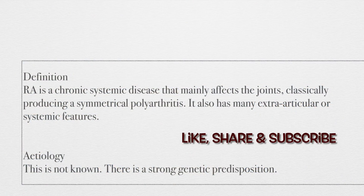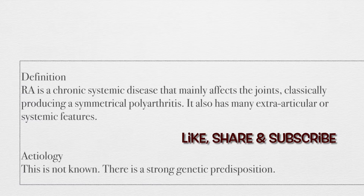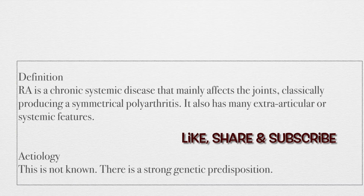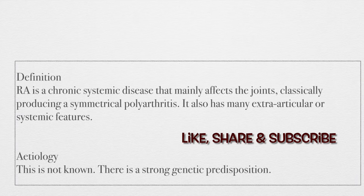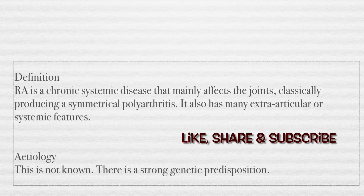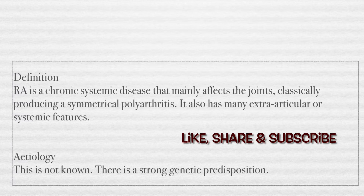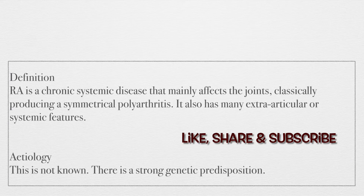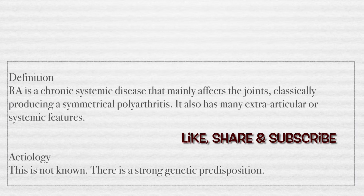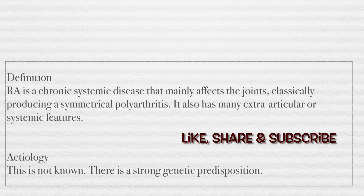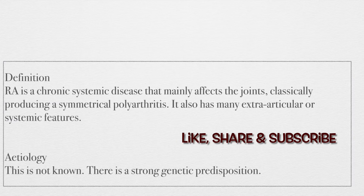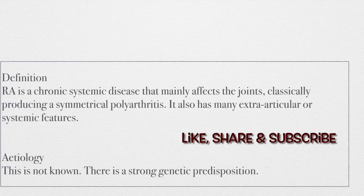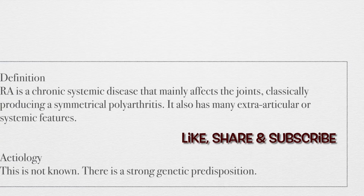Rheumatoid arthritis is a chronic disease which has both articular and extra-articular manifestations. It mainly affects the joints, producing articular symptoms, but it also has systemic effects. The important thing about the joints is that it produces symmetrical polyarthritis.